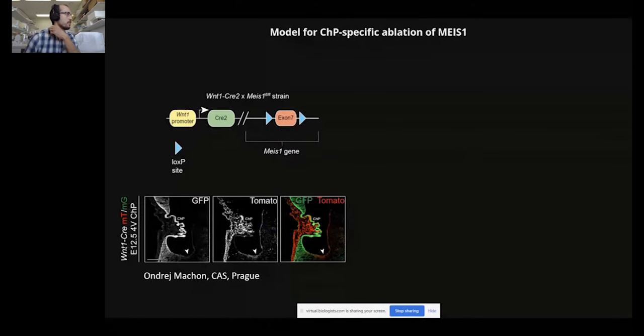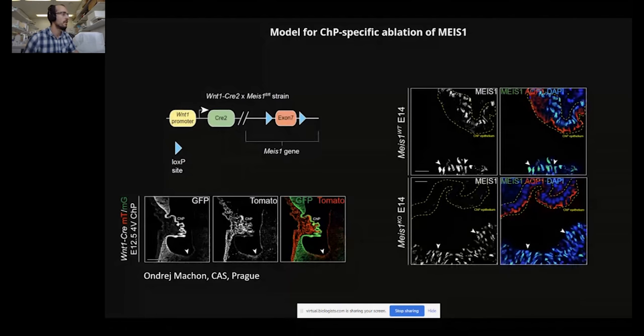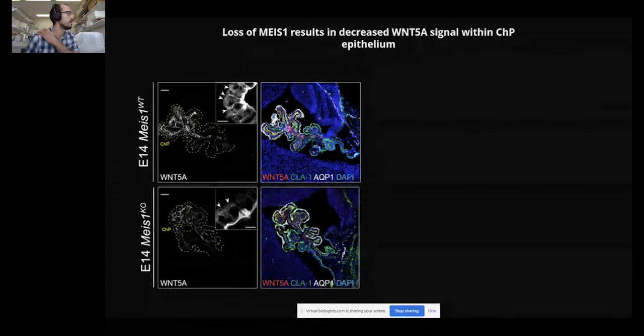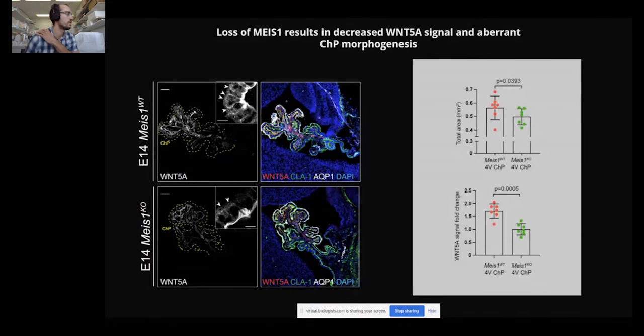Moreover, we also wanted to see the effect of MEIS1 ablation on the tissue, and for this we employed another model for plexus-specific removal of MEIS1 in collaboration with our colleagues in Prague. Here you can see that this model indeed leads to efficient MEIS1 removal from the tissue. As you can see, MEIS1 ablation in the developing plexuses leads to very efficient reduction in the overall WNT5A levels as well as reduction of the size of the tissue.